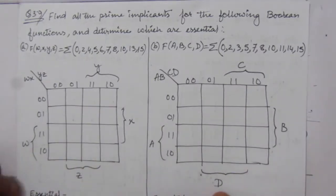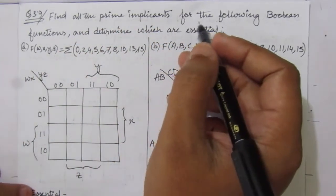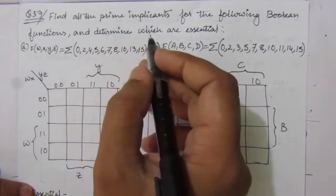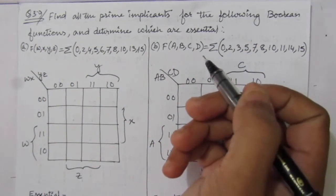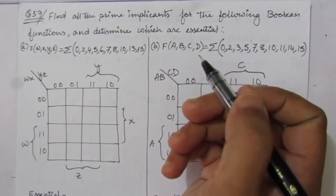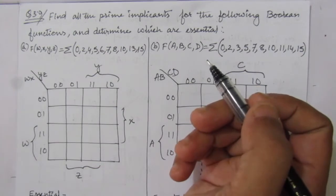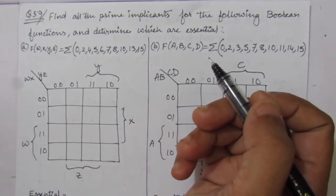The problem is: find all the prime implicants for the following boolean functions and determine which are essential. A prime implicant is one that is necessary to cover all the terms or all the one-values in the map.